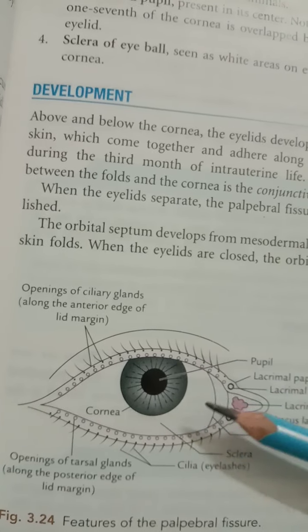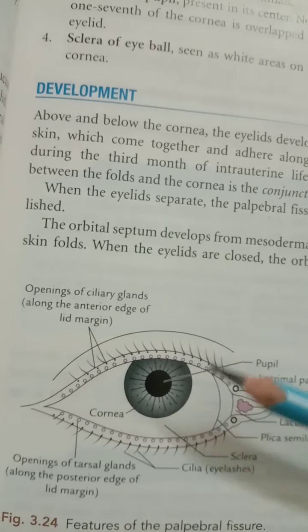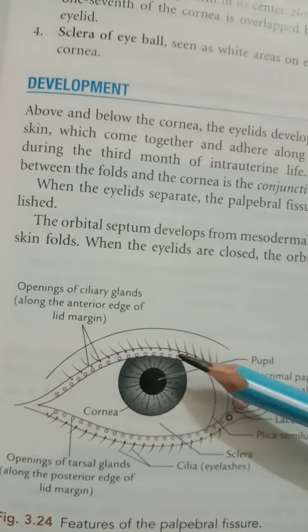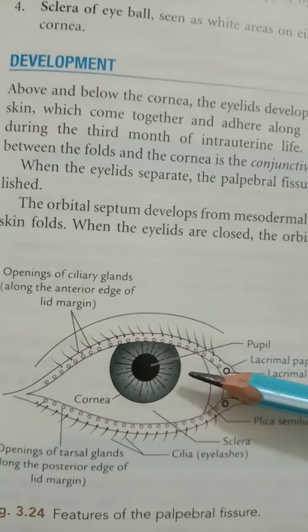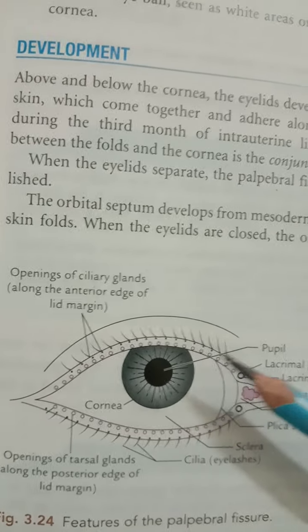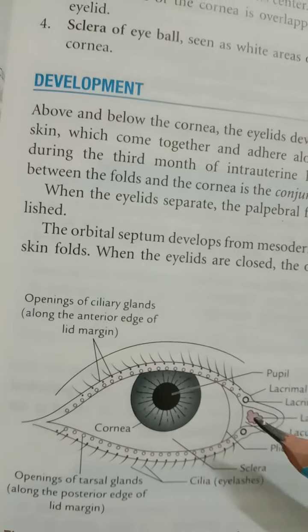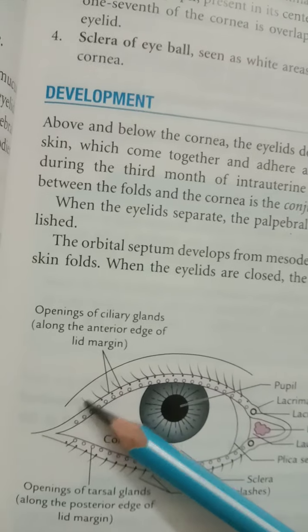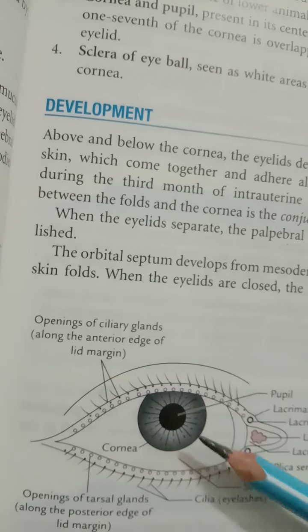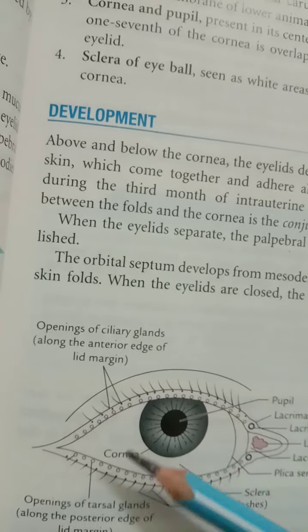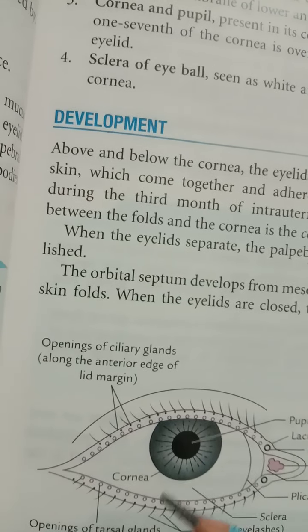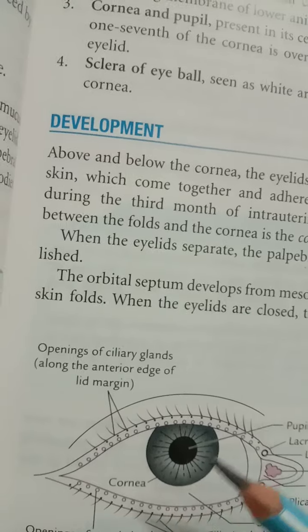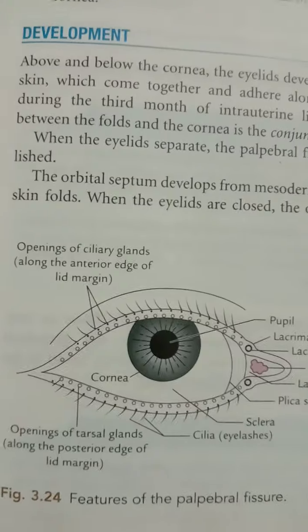The palpebral conjunctiva is highly vascular and firmly adherent to the tarsus plate. The bulbar conjunctiva is loose over the sclera but firmly adherent to the cornea, forming the corneal epithelium. The conjunctiva consists of mucous-secreting glands. The conjunctival sac is filled with three films of fluid: water from the lacrimal gland, mucus from the conjunctiva, and oily secretion from the tarsal glands. Blinking moistens the cornea and drains fluid into the nasal cavity.